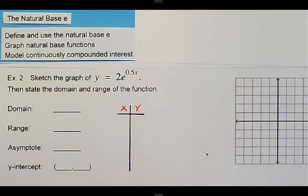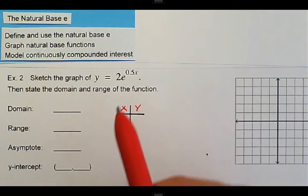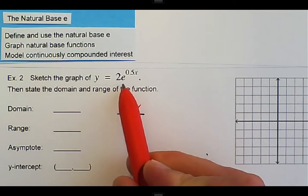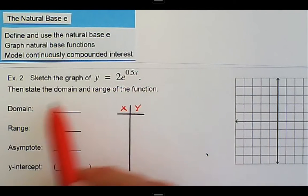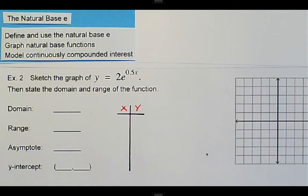Talking about the natural base e, and we want to graph natural base e functions. We have this function: y = 2e^(0.5x), and we want to state the domain and range also.